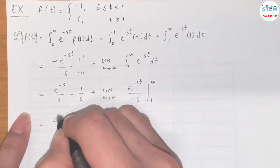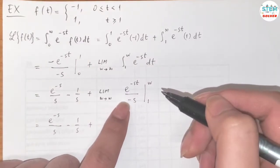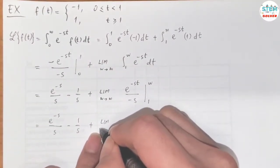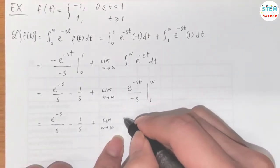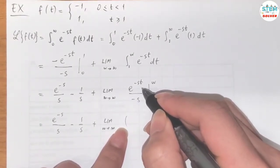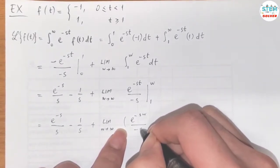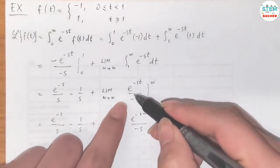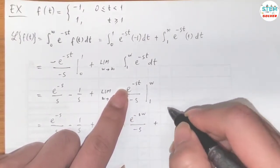So first we just rewrite it. And for this one, we have limit as w goes to infinity. So plug in w, we have e to the negative sw over negative s. Minus negative s here. So we have positive e to the negative s over s.